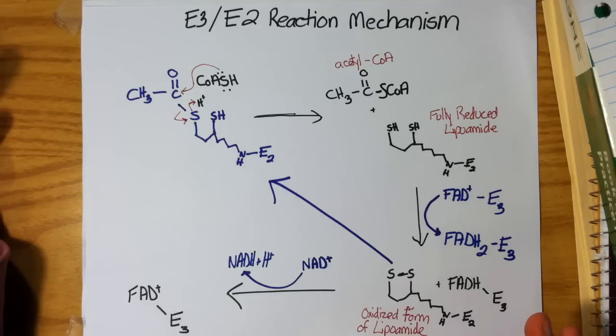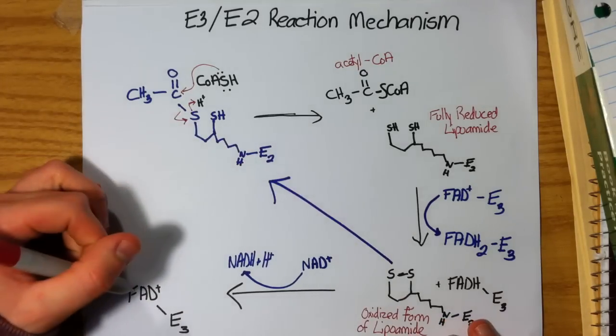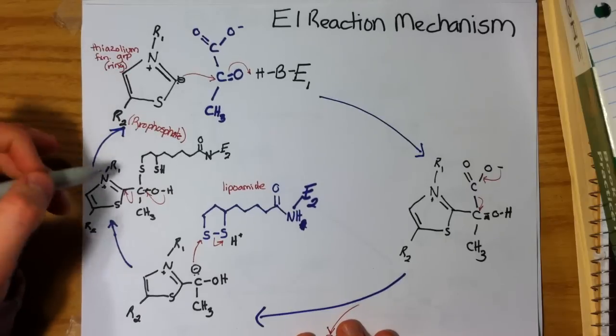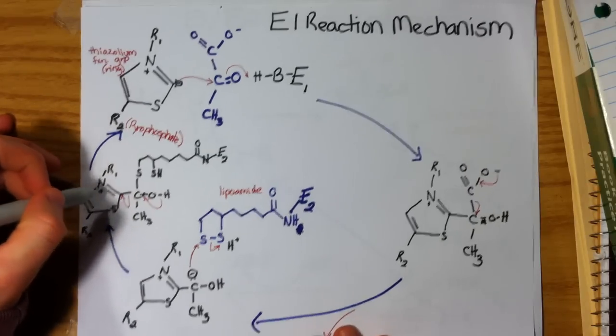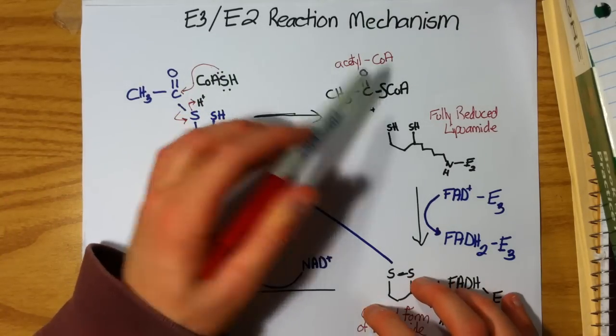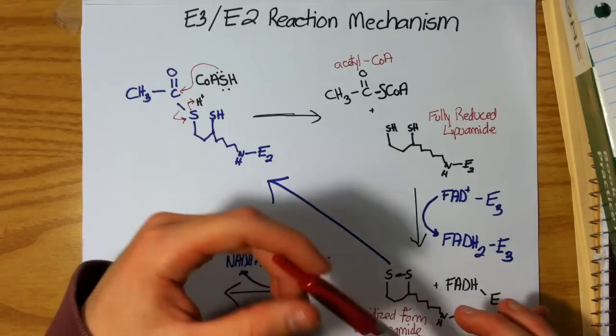So we have regenerated our lipoamide, our FAD+, and also our TPP in the E1 mechanism. And of course, we have created our acetyl-CoA needed for the citric acid cycle.